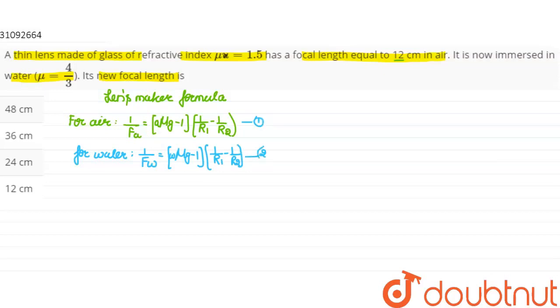Now, we have equation 1 and equation 2. Now, we divide both. Focal length in water divided by focal length in air equals (mu of glass with respect to air minus 1) divided by (refractive index of glass with respect to water minus 1).